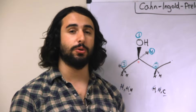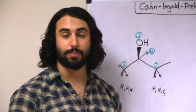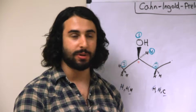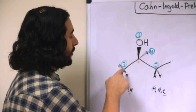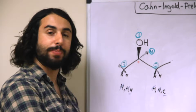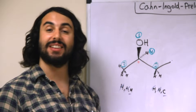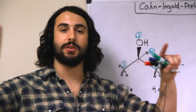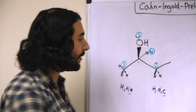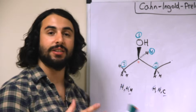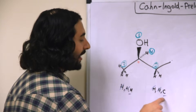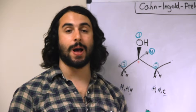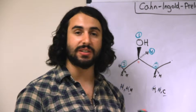I want to stress the fact that as you assign priority via this convention you must go one atom at a time. It is not the case that this is priority two over that carbon because an ethyl group is heavier than a methyl group — that is not the case. What is the case is that they are identical carbon atoms, but because we have to go one point of difference further, we see that H, H, H in totality weighs less than H, H, C. That is why this gets priority two over this.